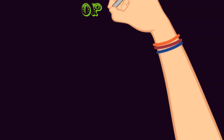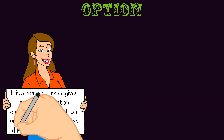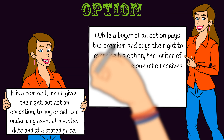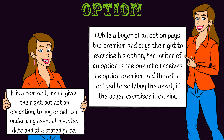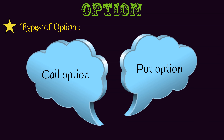The next type of derivative is option. An option is a contract which gives the right, but not an obligation, to buy or sell the underlying asset at a stated date and at a stated price. The buyer of the option pays the premium and buys the right to exercise his option. The writer of an option is the one who receives the option premium and is therefore obliged to sell or buy the asset if the buyer exercises his option. There are two types of option: call option and put option.